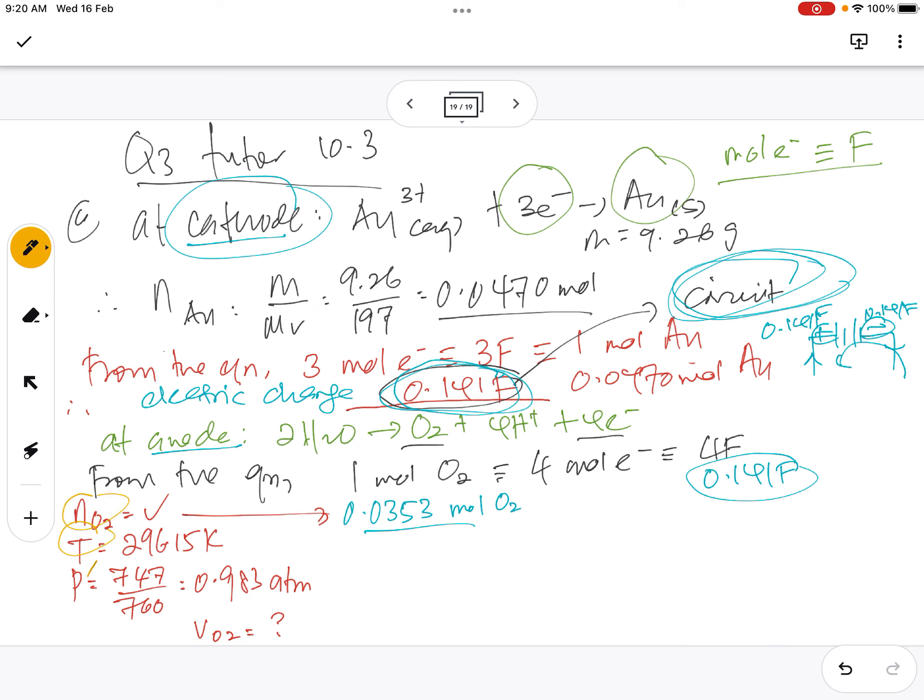The question asks for volume of oxygen gas. Try to observe the parameters here. What formula can you remember? Mole, temperature, pressure, volume. Very good. PV equals to NRT, right? So V equals to NRT over P. Very good. Okay, I write far away because I need space to calculate. I write again, maybe black pen. PV equals to NRT, V equals to NRT over P.